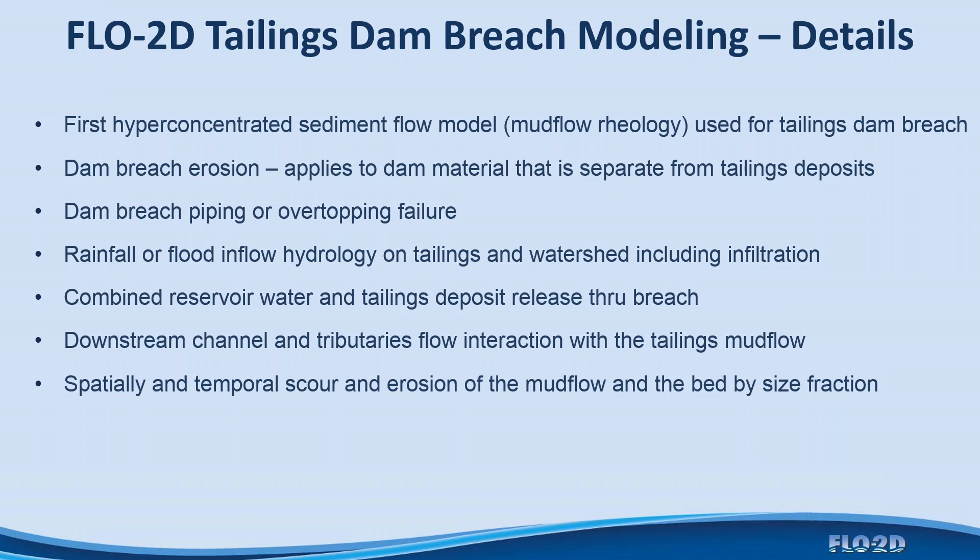Flow2D was the first mudflow model used for tailings dam breaches — actually the first two-dimensional mudflow model, and it went by the name 'mudflow' at one time. It has a dam breach erosion option that can apply to dam material separate from the tailings deposit. You can have a pre-constructed dam storing tailings behind it, with core material as well. The dam breach can occur through piping or overtopping failure, with a prescribed failure defined by vertical and horizontal rates.